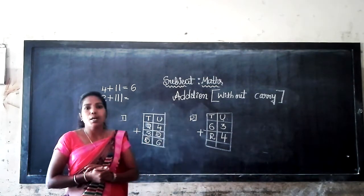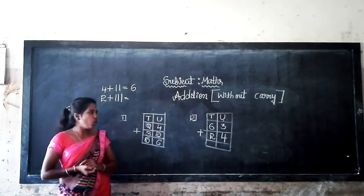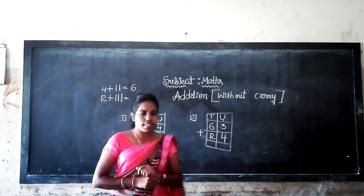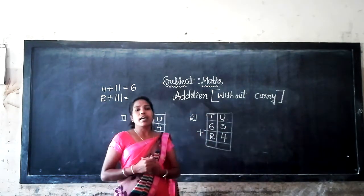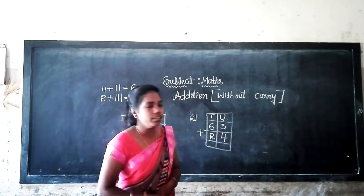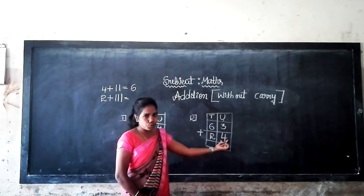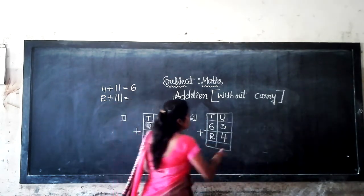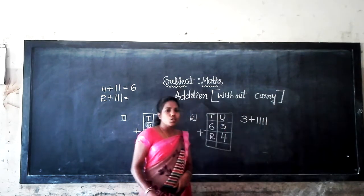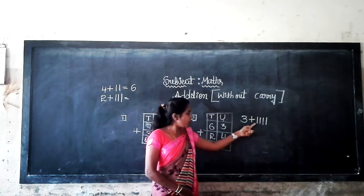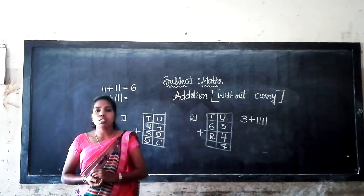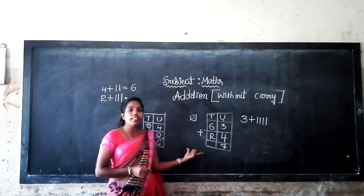Shall we start the actual example to understand better? It is without carrying addition. In 63 there are 6 tens and 3 units. In 24 there are 2 tens and 4 units. Firstly we add the unit place numbers: 3 and 4. What is the sum of 3 and 4? Count from 3: 4, 5, 6, 7. So 3 plus 4 is equal to 7. Now let's look at the tens place numbers.